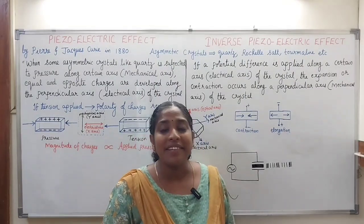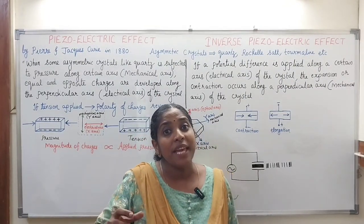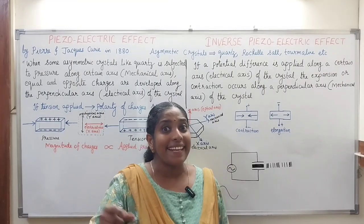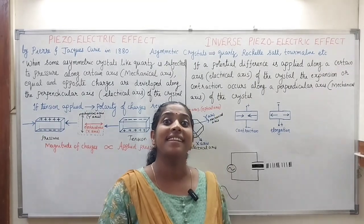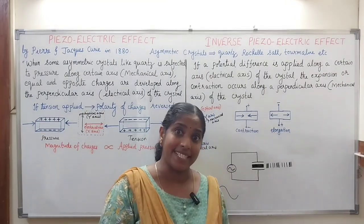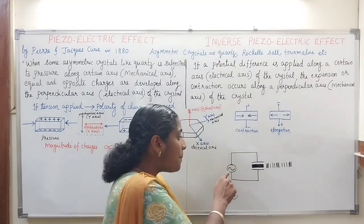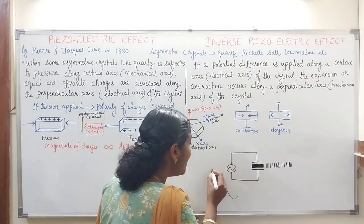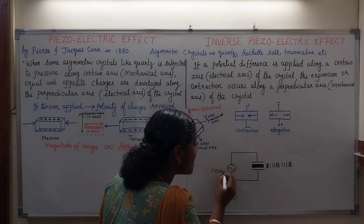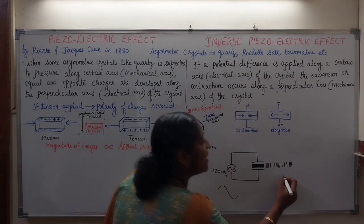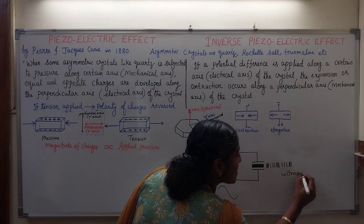What is meant by ultrasonic waves? Ultrasonic waves are waves having frequency greater than the audible range, that is greater than 20,000 Hz. So here, if we apply an AC voltage greater than 20 kHz, then we will get ultrasonic waves.